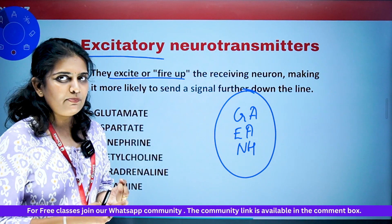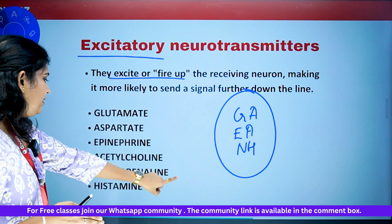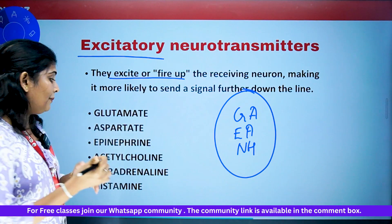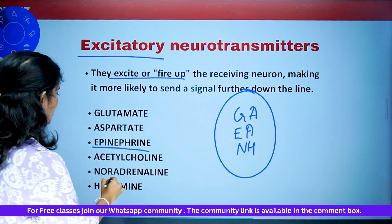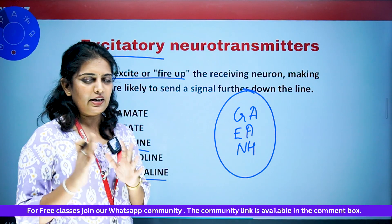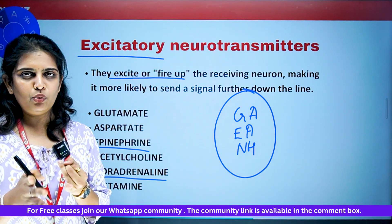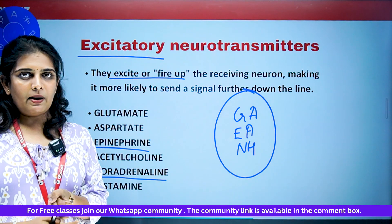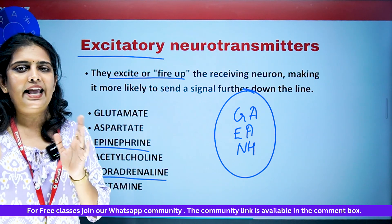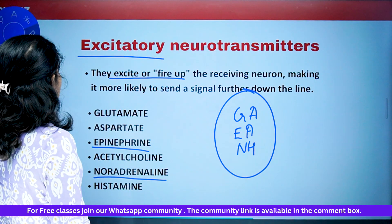The mnemonic for excitatory neurotransmitters is G-A-E-A-N-H: Glutamate, Aspartate, Epinephrine, Acetylcholine, Noradrenaline, and Histamine. Epinephrine is also known as adrenaline, and noradrenaline is also known as norepinephrine, which can be a source of confusion. G stands for Glutamate, A for Aspartate, E for Epinephrine, A for Acetylcholine, N for Noradrenaline, and H for Histamine.